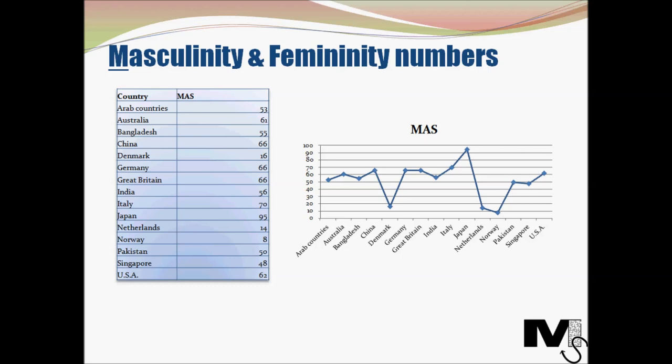Looking at the numbers, Japan and Italy rank as quite masculine. On the other end of the spectrum, you have Norway and Denmark — the Nordic countries — which tend to be quite feminine.